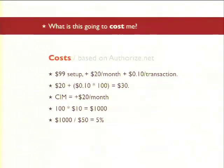What is this all going to cost? Using Authorize.net as your gateway: there's a $99 one-time setup fee, $20 a month to keep your account, and approximately $0.10 per transaction. You also pay $20 a month for the CIM credit card vault. Doing the math with 100 subscribers at $10 a month, you're paying about 5% of your total profit just to use Authorize.net's gateway for charging and storing credit cards. That's the bare minimum you're looking at.